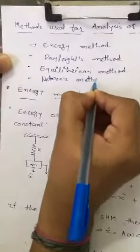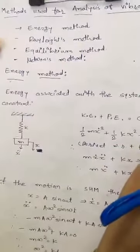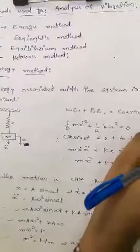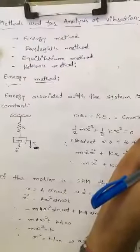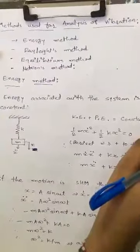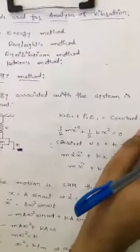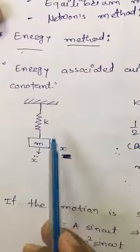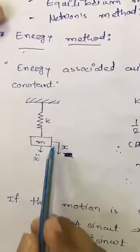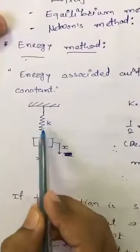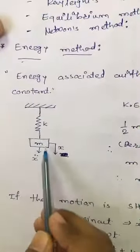Out of these four methods, today we will discuss the energy method. As we know, the law of energy indicates that energy can neither be created nor destroyed. According to that, the energy associated with the system is constant. To describe this method, I will consider one spring-mass system — here is a spring having a stiffness of k, with a mass m attached to it.